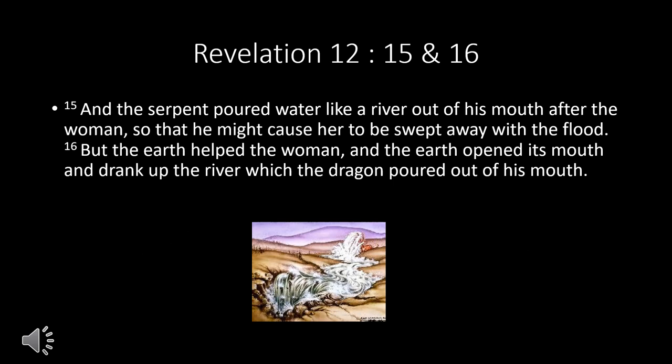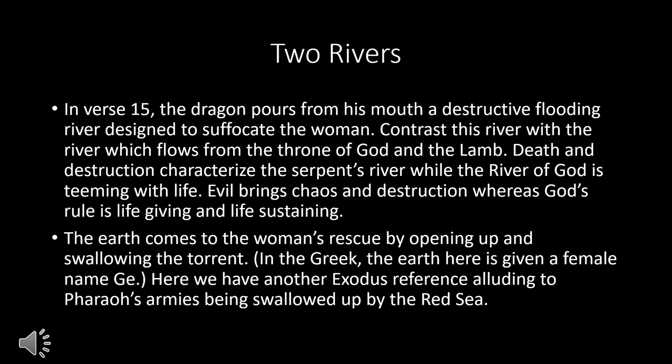Revelation 12:15-16: 'And the serpent poured water like a river out of his mouth after the woman so that he might cause her to be swept away with the flood. But the earth helped the woman, and the earth opened its mouth and drank up the river which the dragon poured out of his mouth.' In verse 15, the dragon pours from his mouth a destructive, flooding river designed to suffocate the woman. Contrast this river with the river which flows from the throne of God and the Lamb — death and destruction characterize the serpent's river, while the river of God is teeming with life. We'll read more about this in chapter 22.